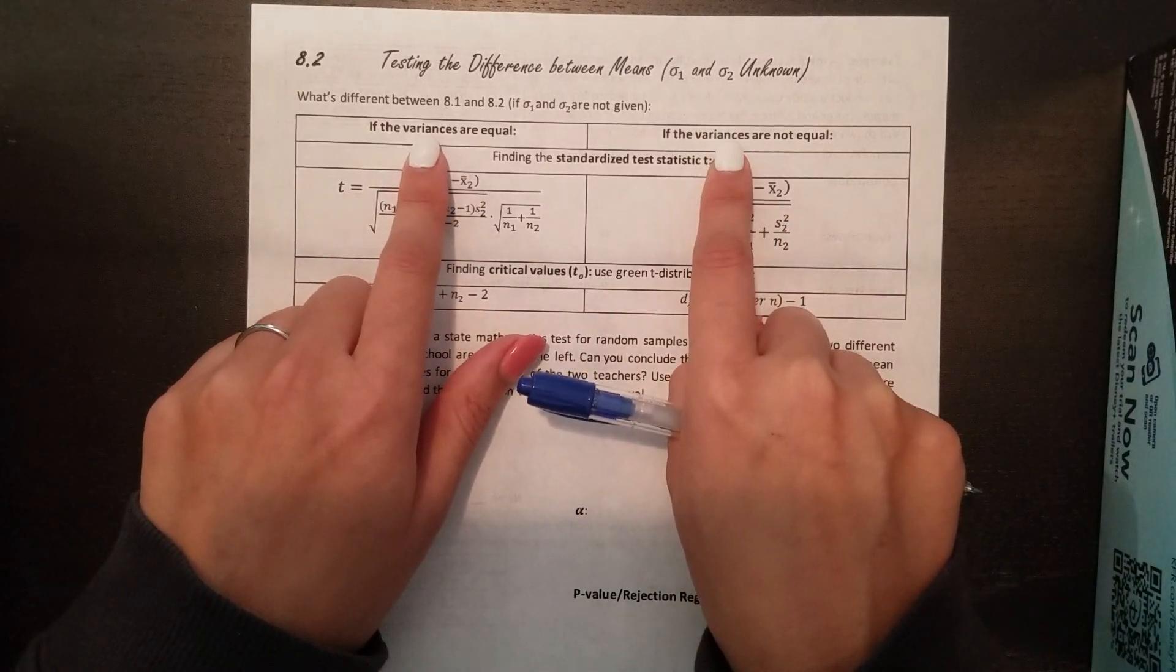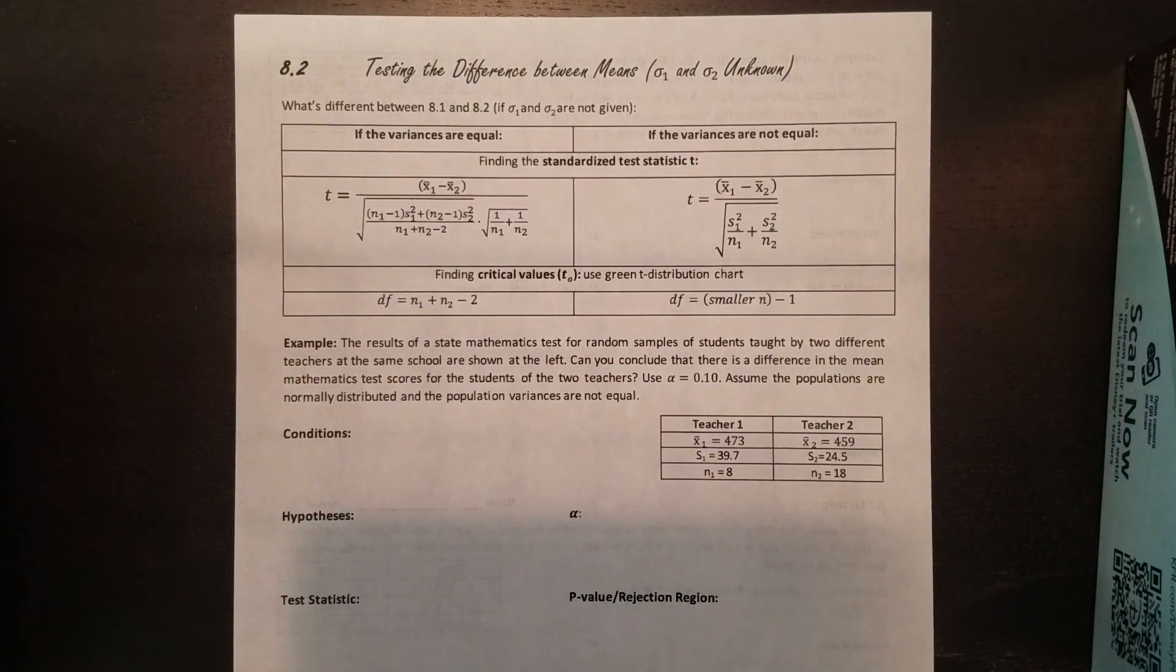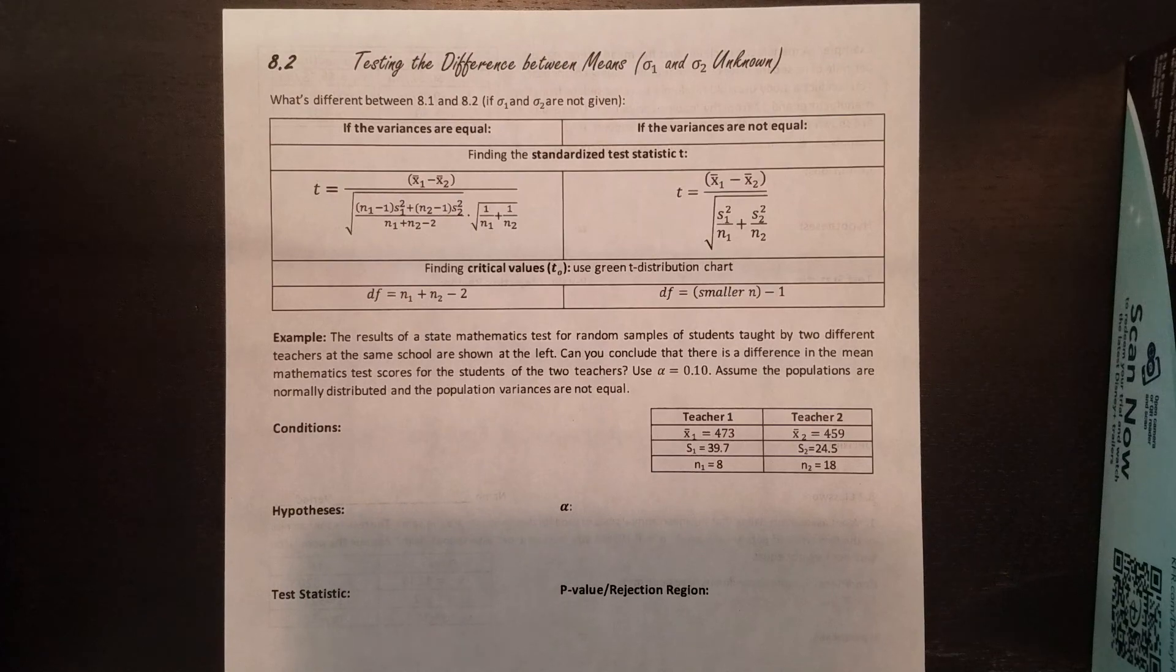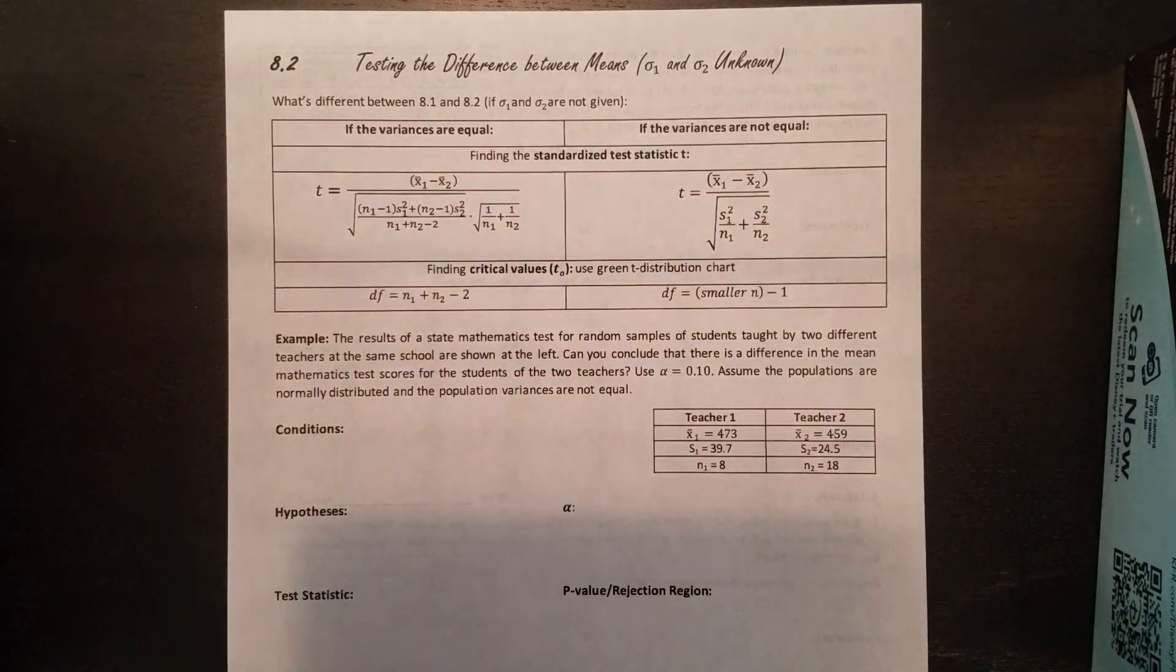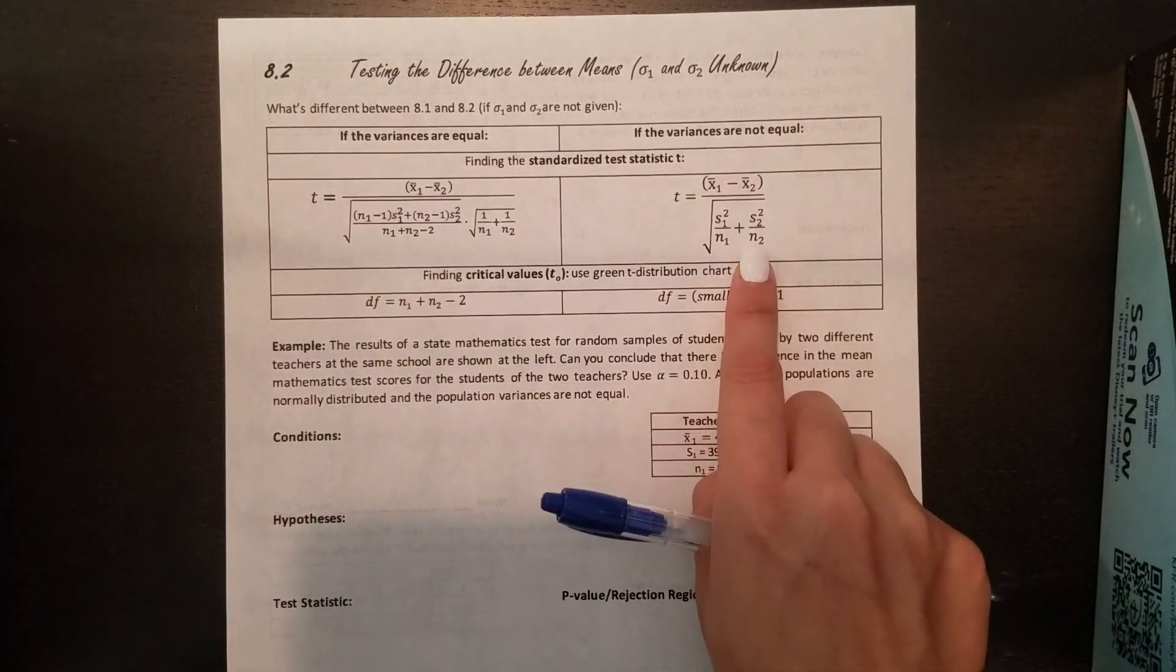What it means when the variances are equal or not equal is that the variance, if you think back, is the square of the standard deviation. If you square root the variance, that'll get you the standard deviation. We're talking about the population ones here. So in general, if you're doing this in real life, sometimes you'll know the variance versus the standard deviation. If these are things that you know are going to be equal or not equal, depending on whatever situation is happening, that's how you know what situation to use. In our problems, it'll always tell you, so you don't have to figure it out for yourself. You just need to read properly. If it says that they're equal, use this crazy formula. If they're not equal, use a slightly less crazy formula.